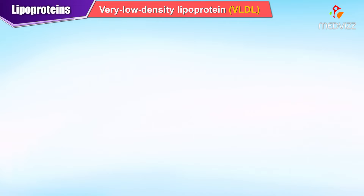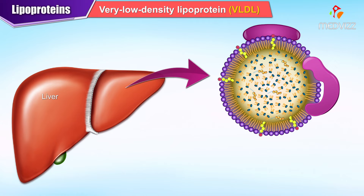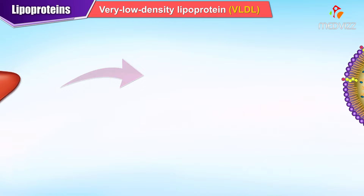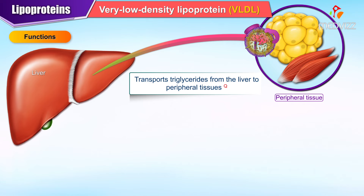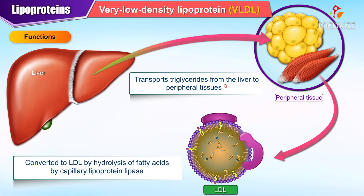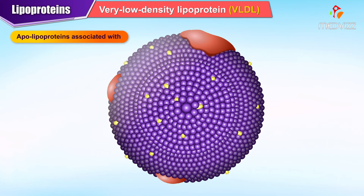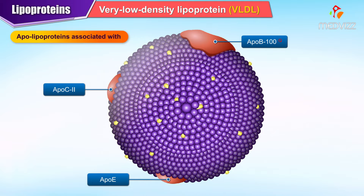VLDL is a lipoprotein secreted by the liver. It comprises triglycerides more than cholesterol. Its function is to transport triglycerides from the liver to the peripheral tissues. It is converted to LDL by hydrolysis of fatty acids by capillary lipoprotein lipase. Apolipoproteins associated with VLDL are ApoE, C2 and B100.